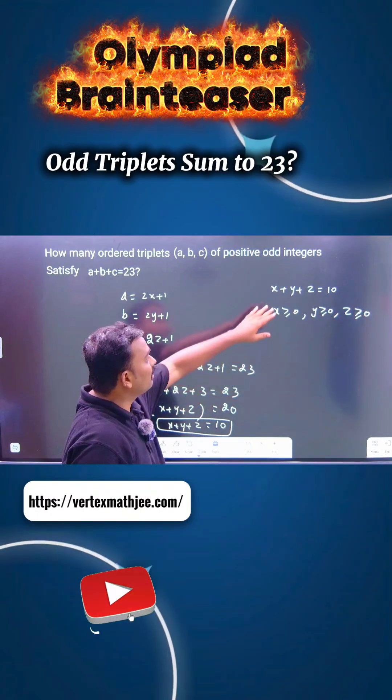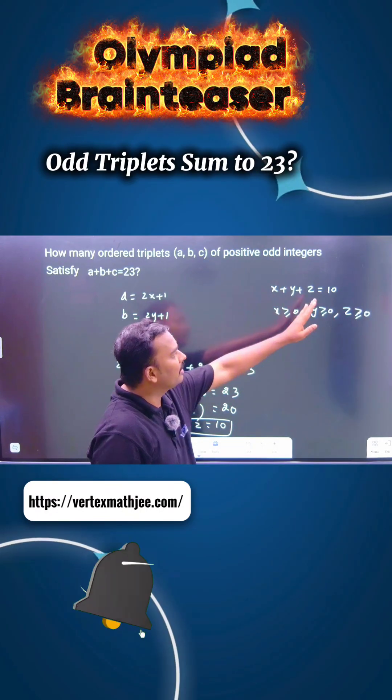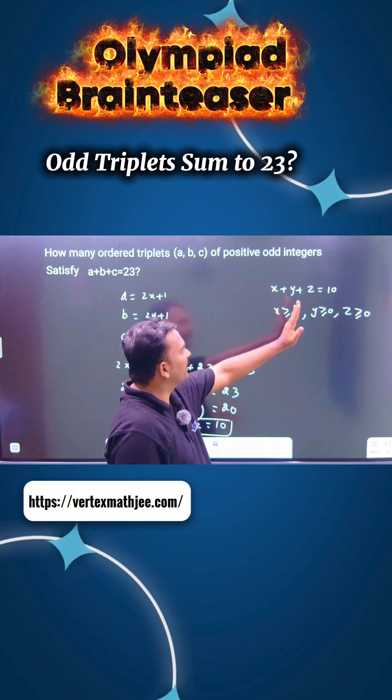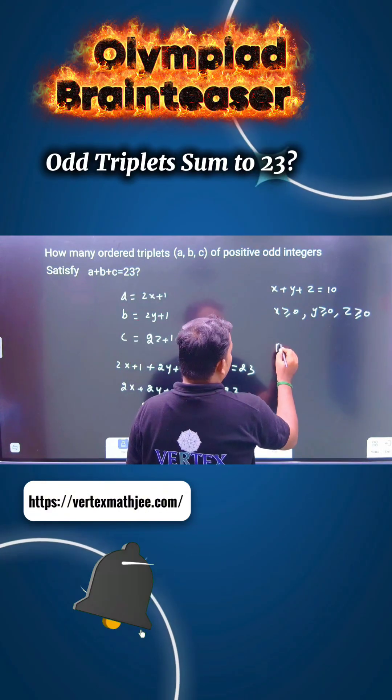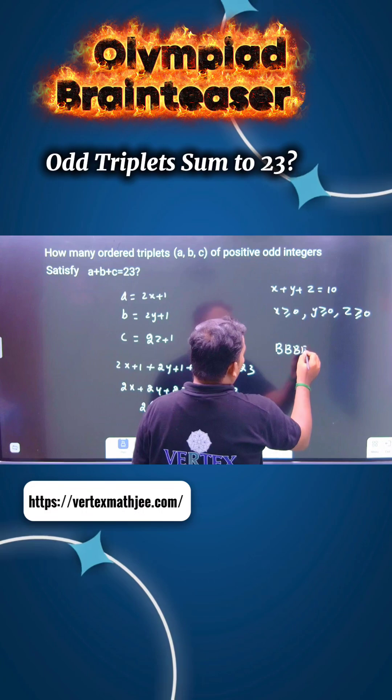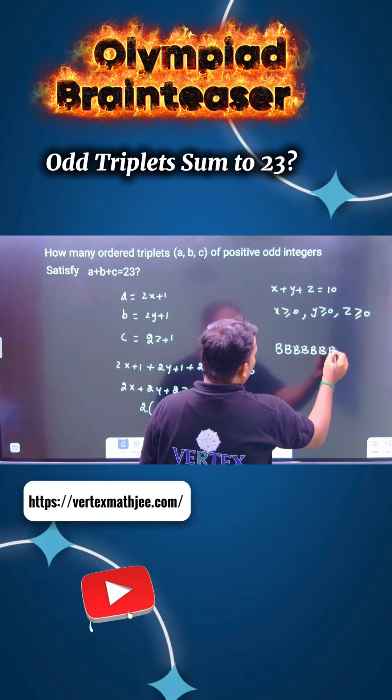Just imagine there are three different boxes and 10 identical balls. You have to distribute them. Each box may be empty. There are 10 identical balls here, all are the same.